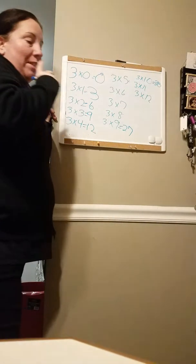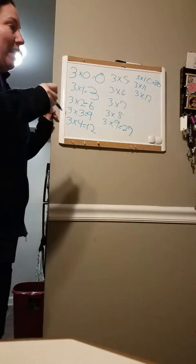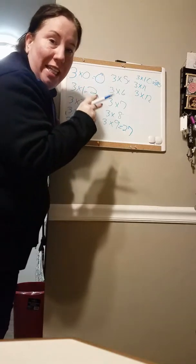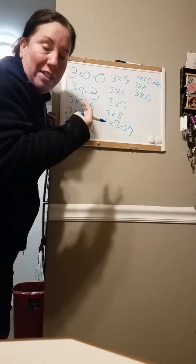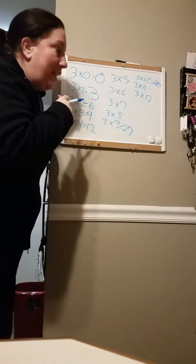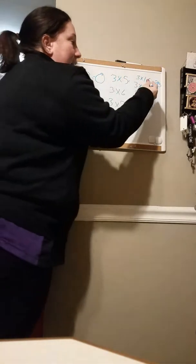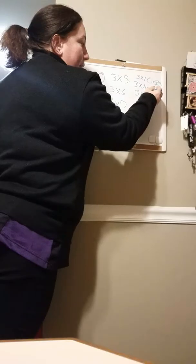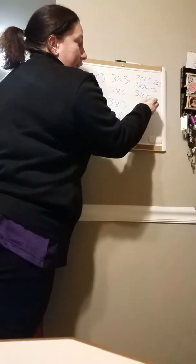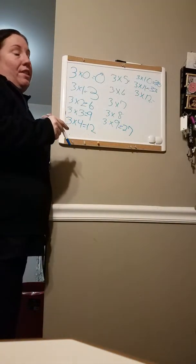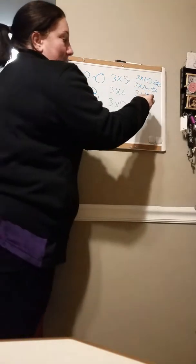And three times eleven — that's just the same number twice. Anything times eleven, you just have the same number two times. So it's three-three, meaning three times eleven is thirty-three. And three times twelve is thirty-six.